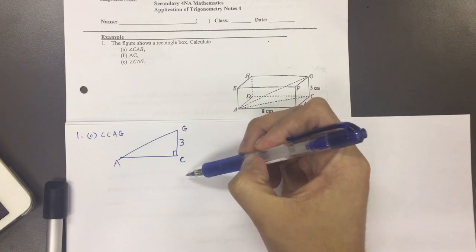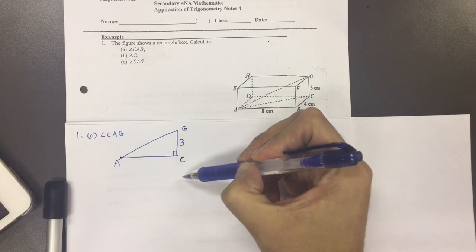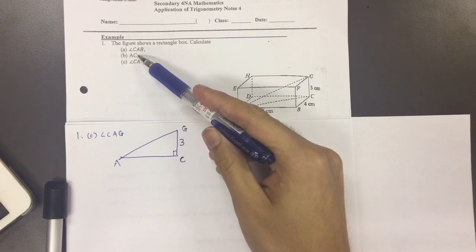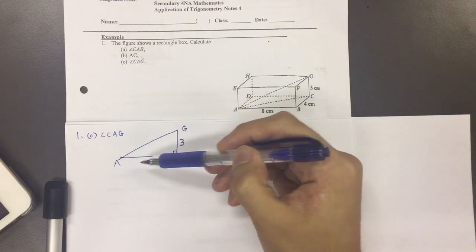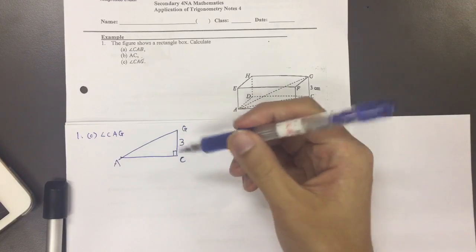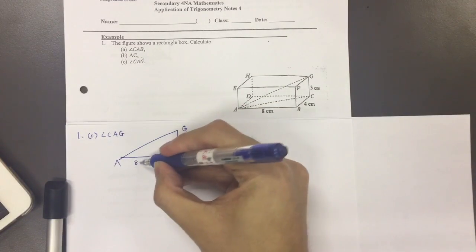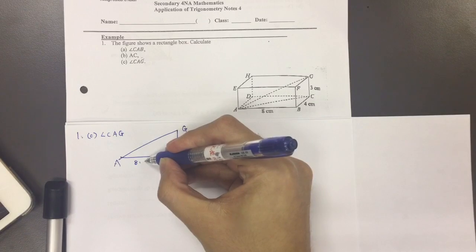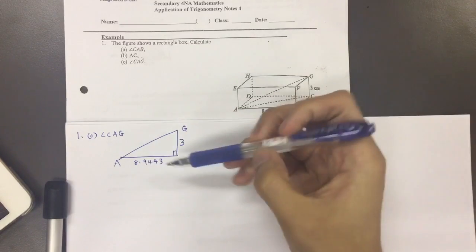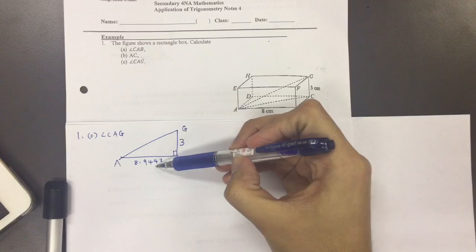AC, where do we get AC from? Ah, actually it was part B. So we will use the more accurate value of 8.9443 rather than the 3SF version. So we use the 5SF version.